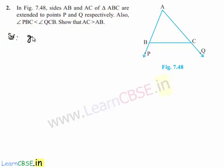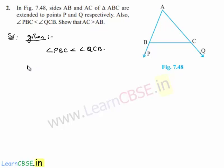Now moving on to the solution. Let us note down the given information. It is given that angle PBC is less than angle QCB, and we are required to prove that AC is greater than AB.